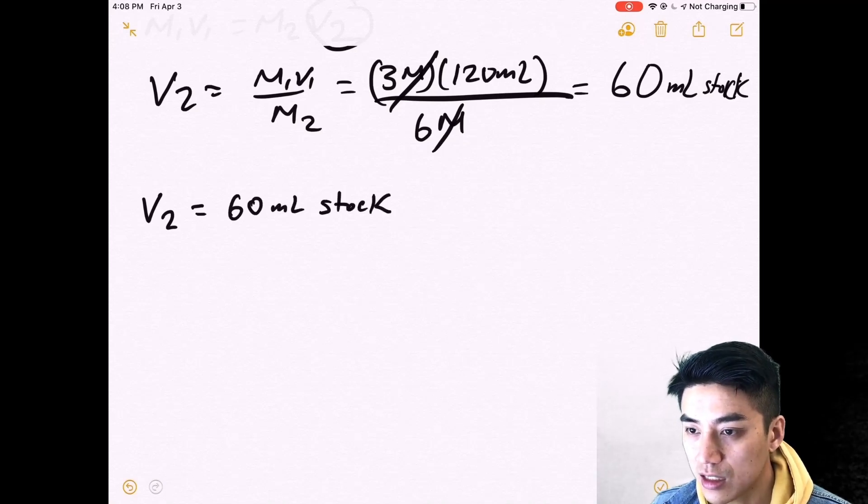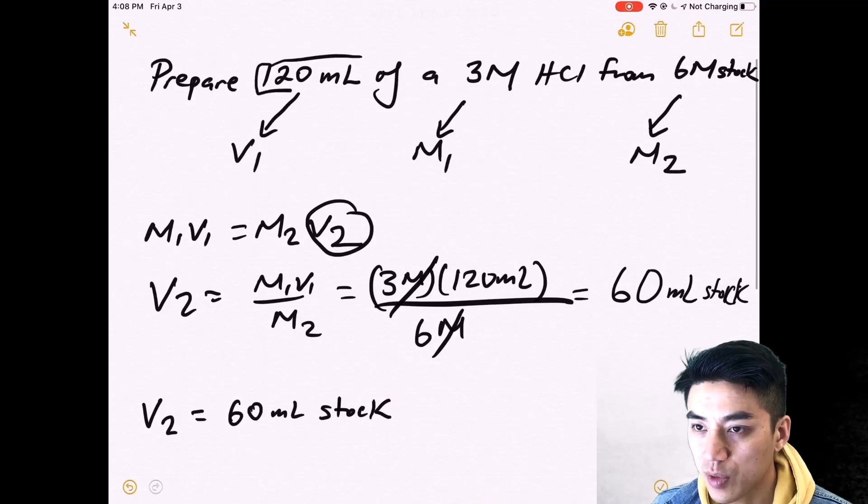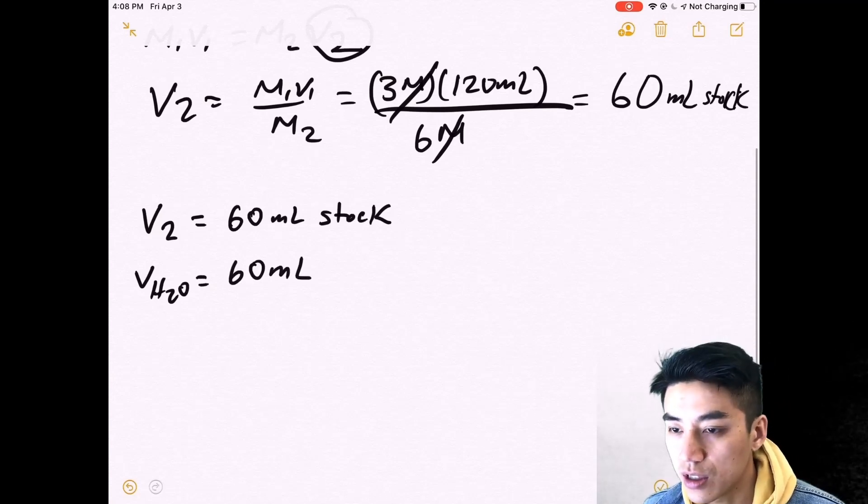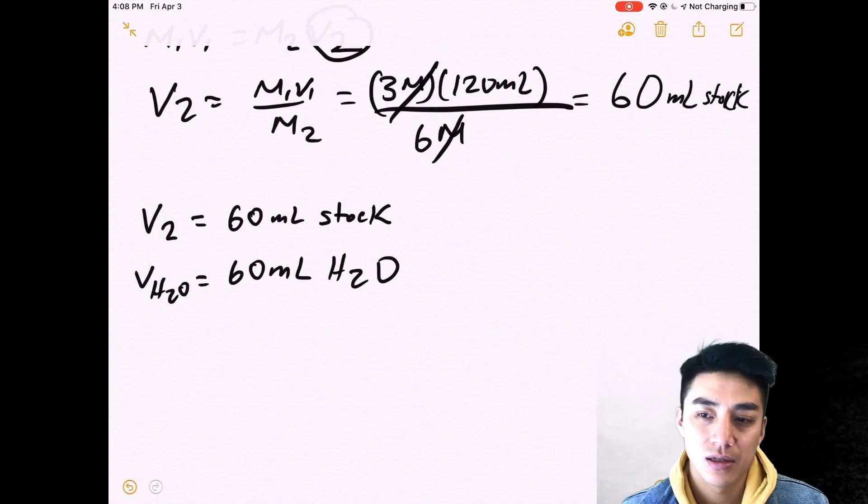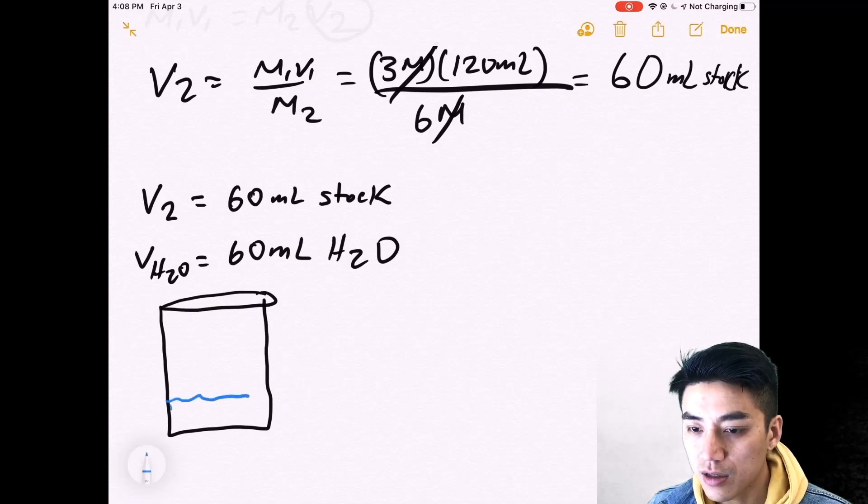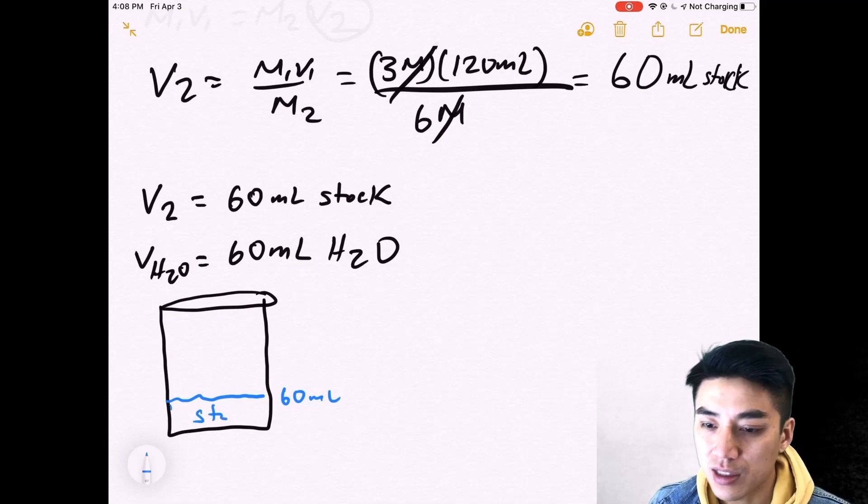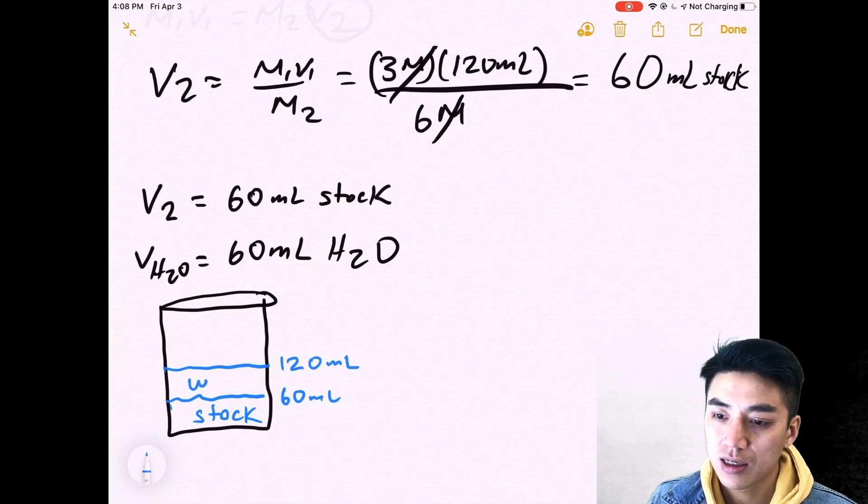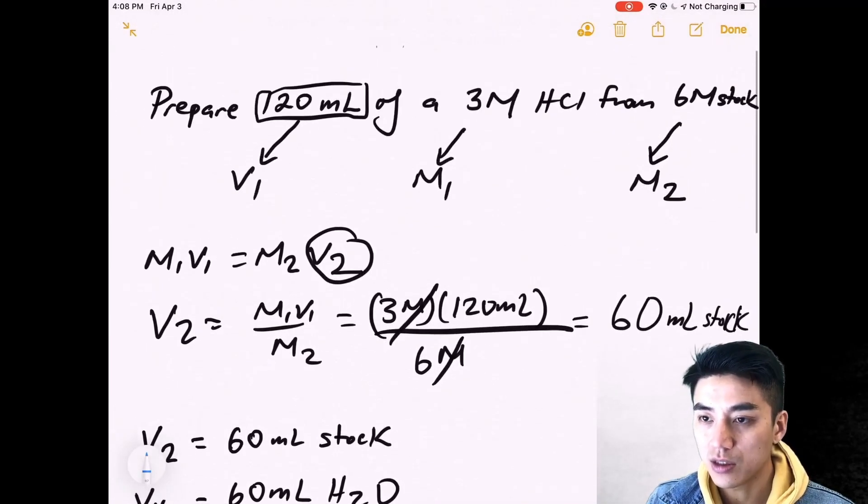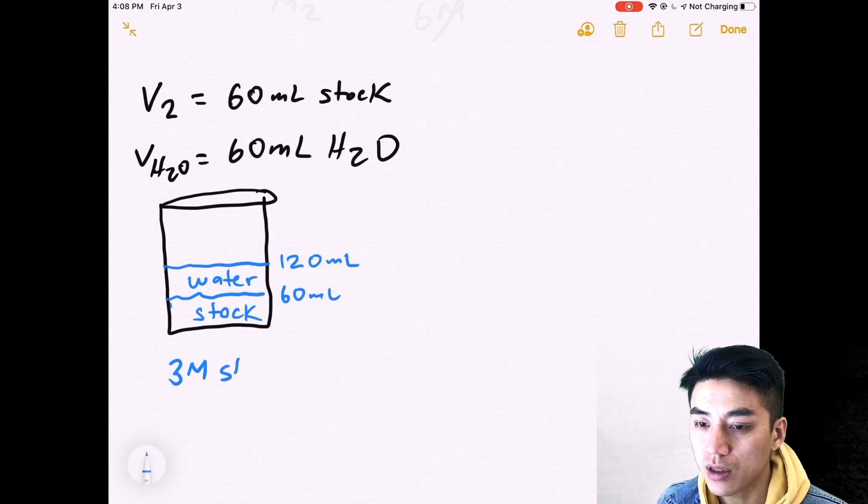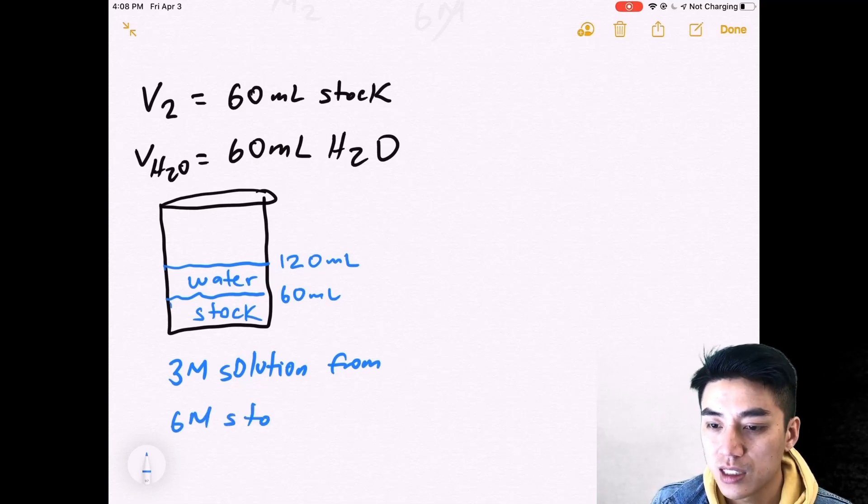Okay, so the amount of stock is 60 milliliters. You were asked to prepare 120 mils in total. So how much water do I need? The remainder has to be 60 milliliters of water. It only makes sense because 60 plus 60 gives you 120. Here's a picture again. So in theory, if I wanted to produce this type of solution, I would measure out 60 mils of the stock of my concentrated stock solution. And the remainder has to be water. How much water? It's got to be 60 because I want a solution that's 120 in total. So what do we do here? I prepared a 3 molar solution. This is a newly diluted 3 molar solution from the original 6 molar stock.